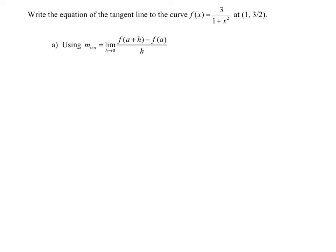Write the equation of the tangent line to the curve f(x) = 3 divided by 1 plus x squared, at the point (1, 3/2). We are going to do this problem twice, showing how we can use both of our different formulas for finding the slope of the tangent line. Remember, if we're trying to write the equation for a line, we need a point and we need a slope. We have the point, so we have to do some work to find the slope.